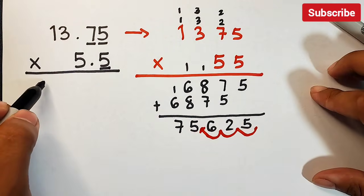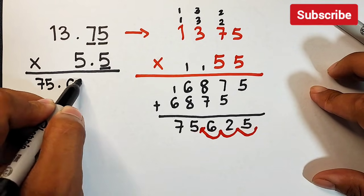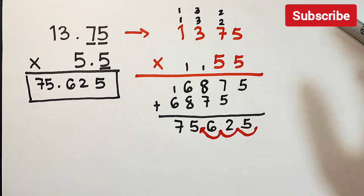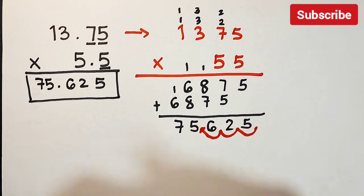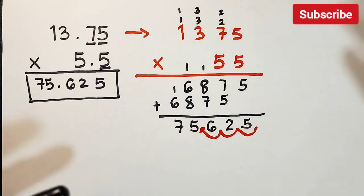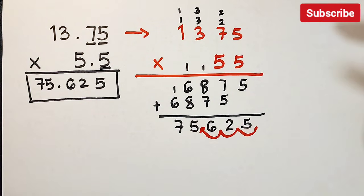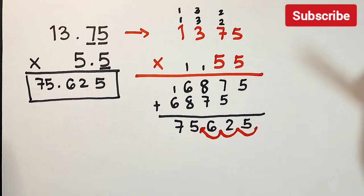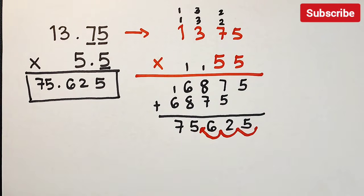Our final answer is 75.625. We hope you learned something about how to multiply decimals. If you have questions, feel free to ask in the comment section. If you're new to my channel, don't forget to like and subscribe and hit the notification bell for the latest uploads. Again, it's me Teacher. Maraming salamat, bye!